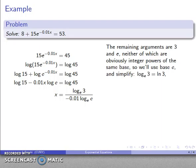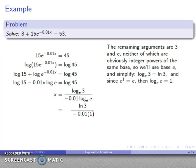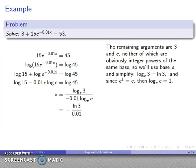The remaining arguments are 3 and e, and neither of these is obviously the power of some base, so we'll use base e and simplify where we can. Whenever we're using base e, we want to use the function ln, not log, so log to base e of 3 we can write as ln 3. By the way, ln is correctly pronounced log—there is only one real log. I know e to power 1 is equal to e, so that says that log to base e of e itself is the exponent, equal to 1. So this part here is 1. This is ln 3 over negative 0.01, which I'll simplify a little bit further, and there's my value of x.